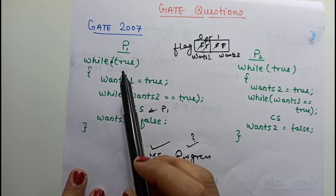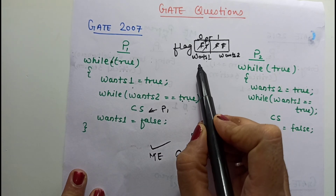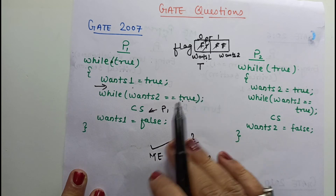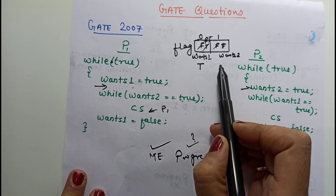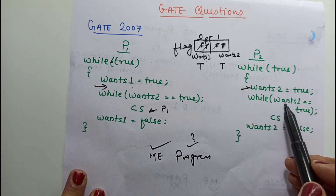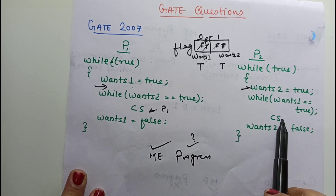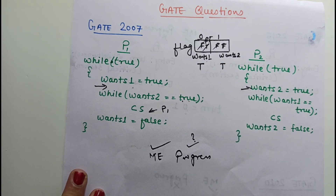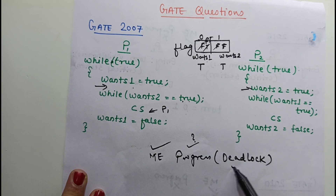But there is a caution. Consider this situation: if P1 wants to execute its critical section, it comes inside and sets wants1 to true. At this point, there is a context switch and P2 gets the CPU. P2 also wants to execute its critical section, so it sets wants2 to true. Now P2 enters the while loop and checks wants1 — it is true — so P2 waits. When P1 resumes, it checks wants2 — it is true — so P1 also waits. No one is executing the critical section, but neither can proceed. This is a deadlock situation.